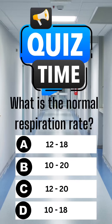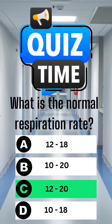What is a normal respiration rate? A. 12 to 18. B. 10 to 20. C. 12 to 20. D. 10 to 18. The correct answer is C. 12 to 20.